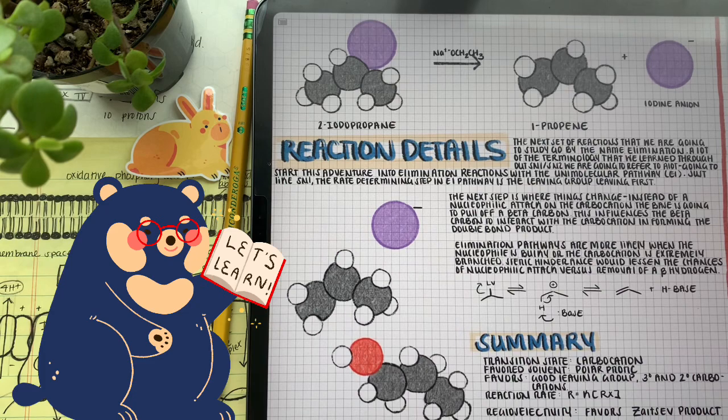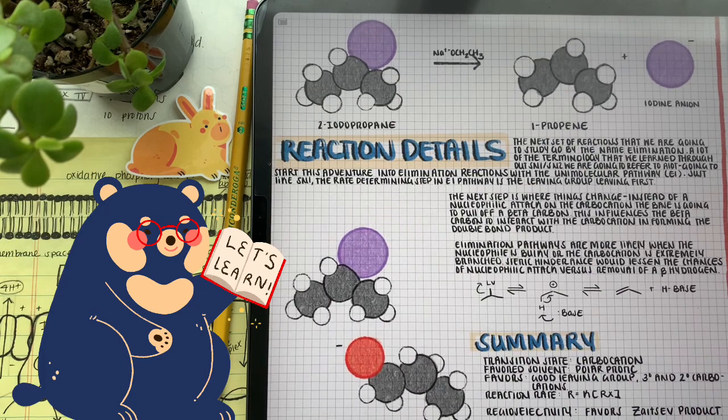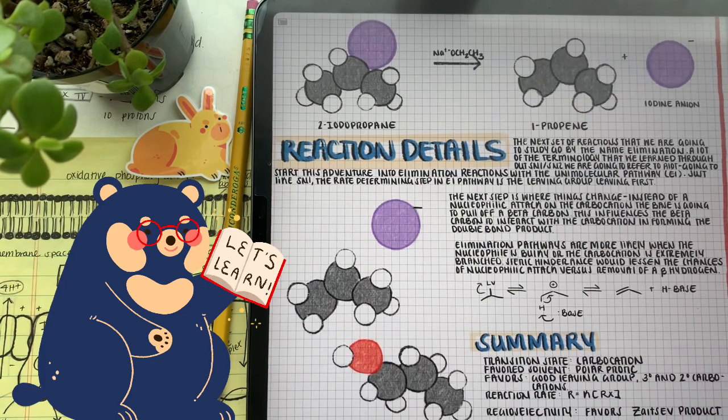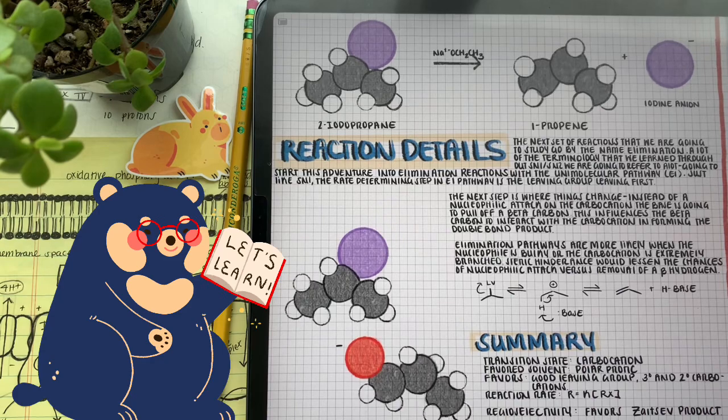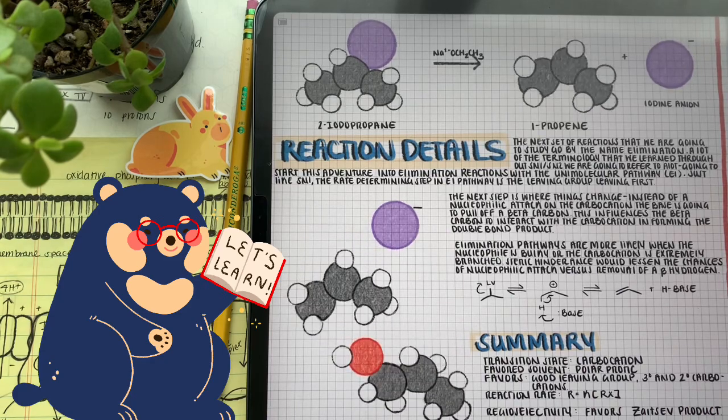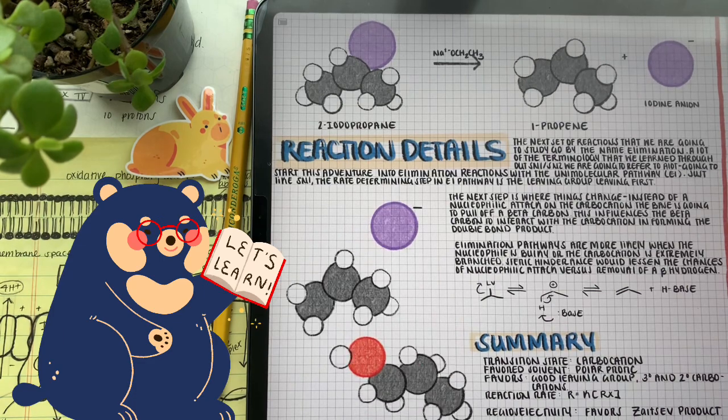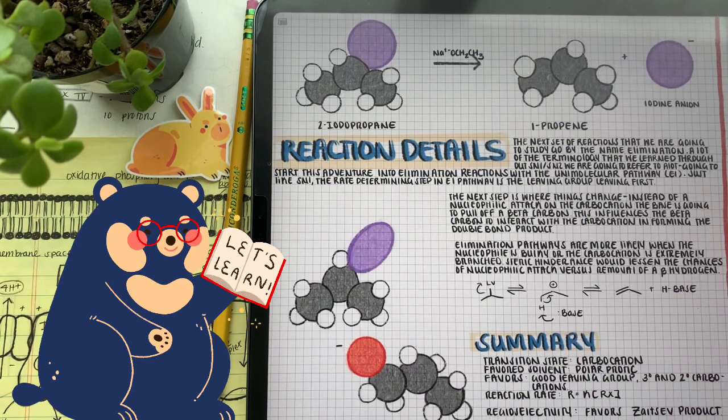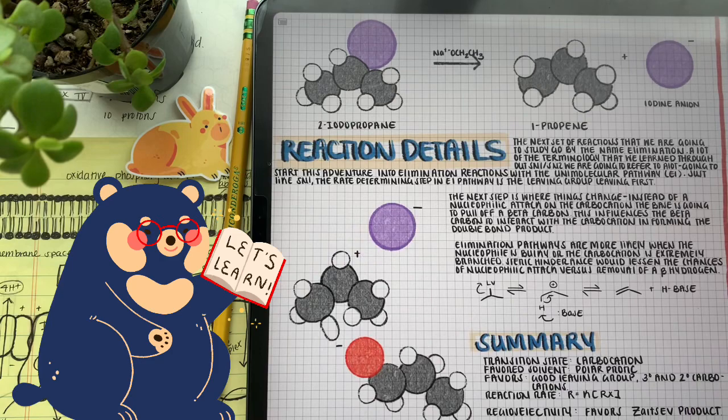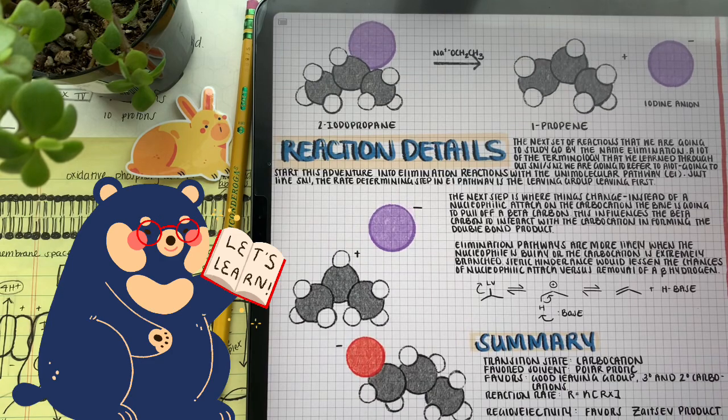The reason why the base attacks the beta hydrogen is because if it attacked the hydrogen on the alpha carbon, or the carbon with the positive charge, it won't be able to form a double bond. Through attacking that beta hydrogen, the electrons can be promoted to form that double bond to suffice that positive charge on the alpha carbon.